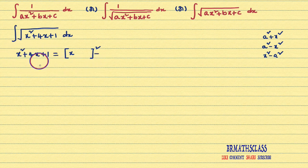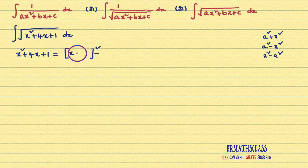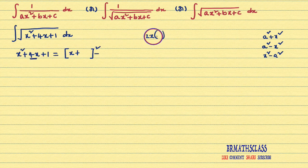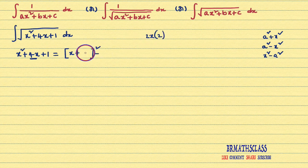We are following a trick to write this expression into one of those forms. After x², what sign is there? You write the same sign. After x², plus sign is there, so we write plus here. Now you need to find a number such that 2x into that number gives you 4x. That number is 2 — if you multiply 2x into 2, you get 4x. So that number is 2. After writing this number, minus the square of this number: 2² = 4.